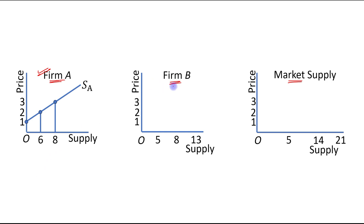Now for Firm B: at a price of rupees 1, Firm B is producing 5 units; at a price of 2, Firm B is producing 8 units; and at a price of 3, Firm B is producing 13 units. We join these three points and this is the supply curve of Firm B.